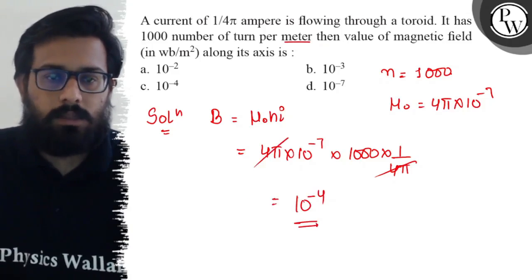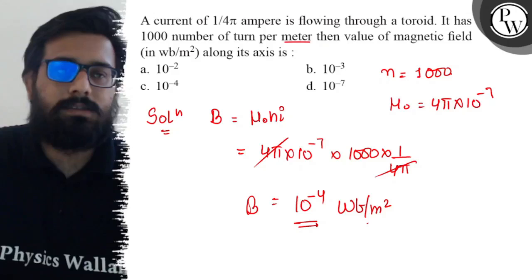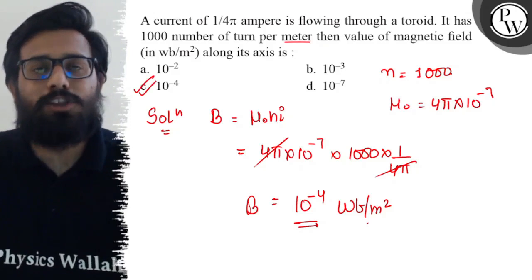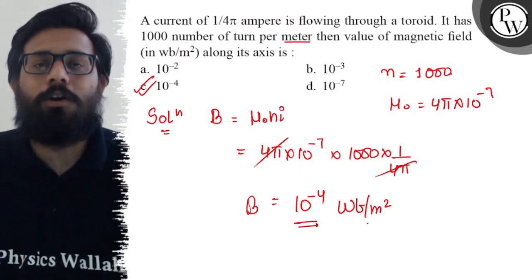So the value of magnetic field is 10 raised to power minus 4 weber per meter square, which you get in c option, and hence your c option is absolutely correct. I hope you got the concept of this question on the toroid.